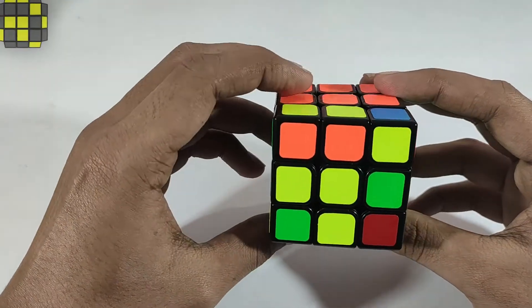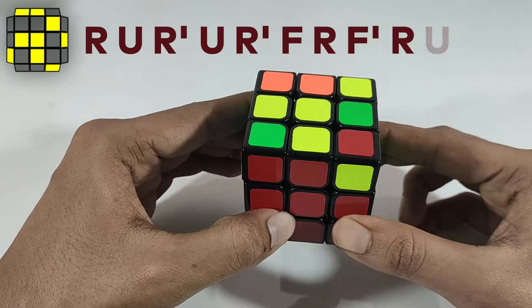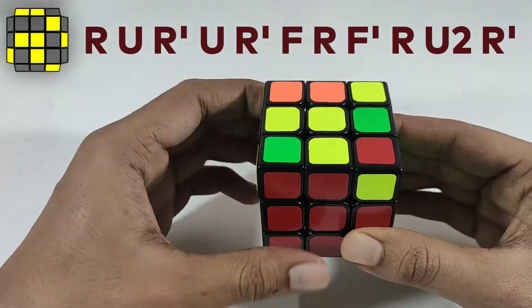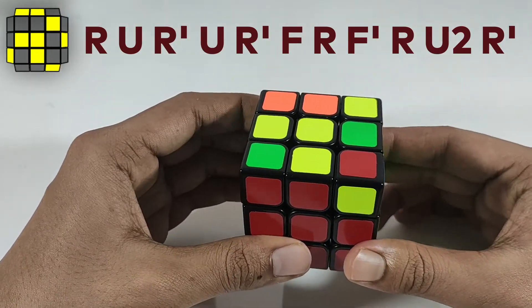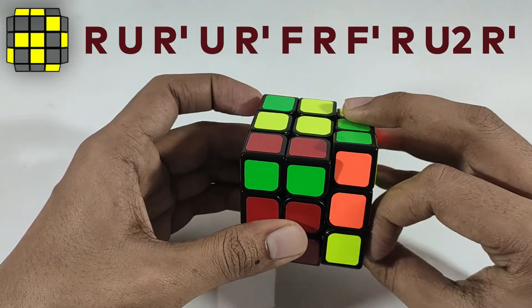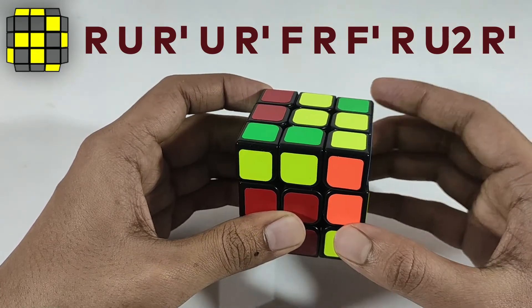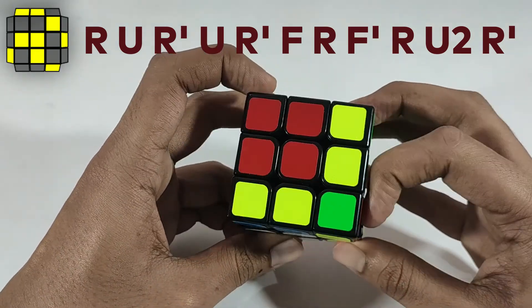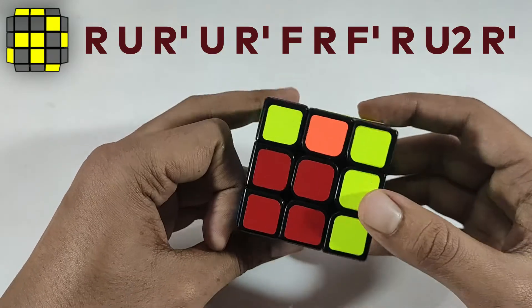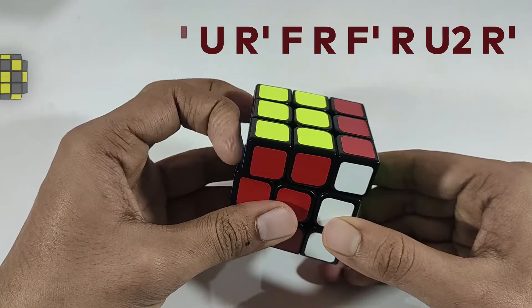If you do it like this, it will be on the top. But when you are solving, you have to keep it like this so that it will be on the back. The algorithm goes like this: it's R U R' U and then hammer, that is R' F R F' R U' R' U' R'